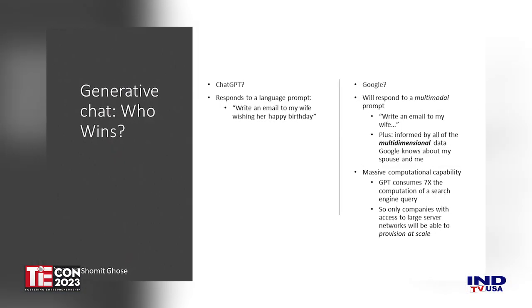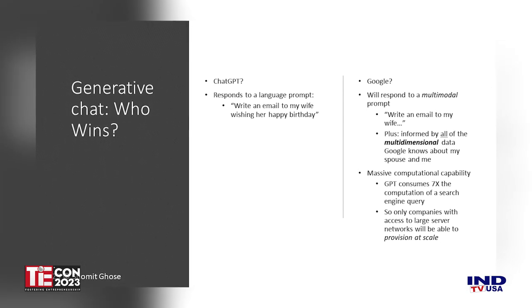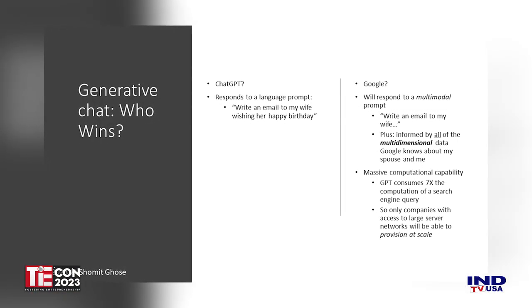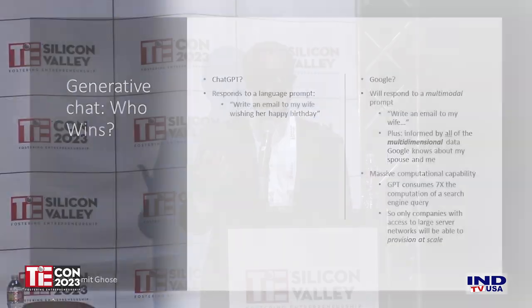Even with ChatGPT, which does a great job of responding to prompts, I'm going to go out on a limb and predict that Google still wins this battle. The reason is that they have so many different prompts about me personally. If I want to write an email to my wife saying let's go out to dinner for your birthday, not only does Google know the prompt, but they'll be using everything else Google knows about me — how old I am from YouTube, where my wife and I like to go to dinner from Google Maps, et cetera. Multimodal prompts will come into play, which spells the big players winning once again.